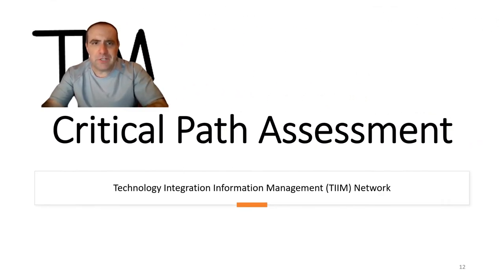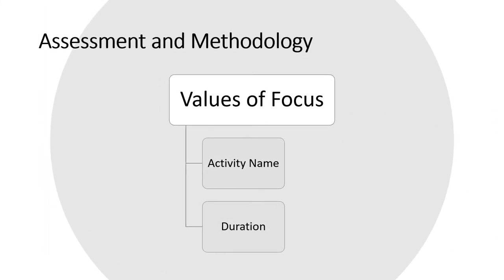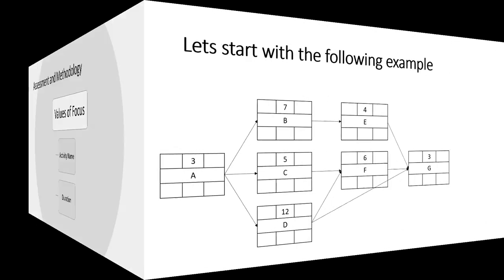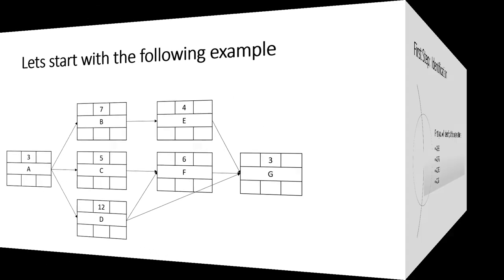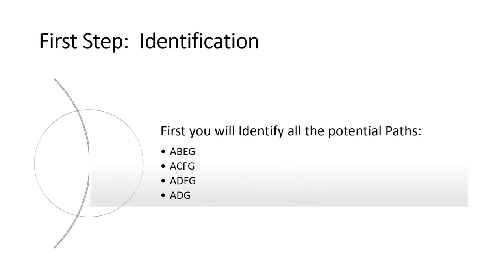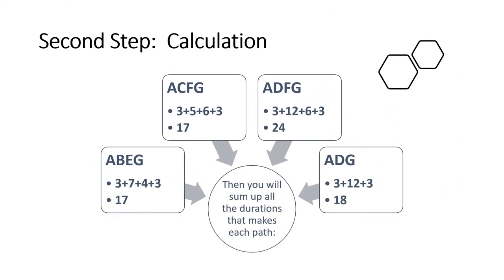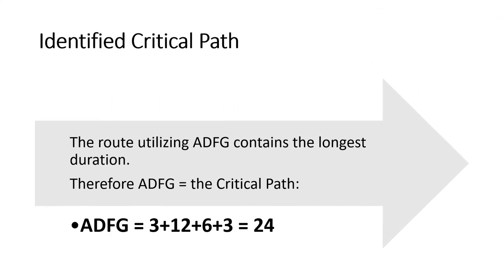Now that we have gone over all the initial definitions and components of the network diagram, let's now identify the methodology in assessing the critical path. For the purpose of this approach, let's focus on the values of activity name and duration. This slide displays the duration and activity name as well as the areas of divergence and convergence. First, identify all the potential paths. Second, calculate the sum of the durations in each path. The critical path will be the path identified with the greatest sum. In this instance, it is ADFG.